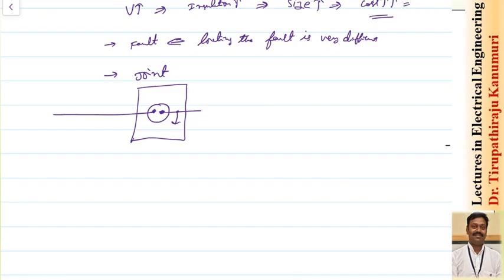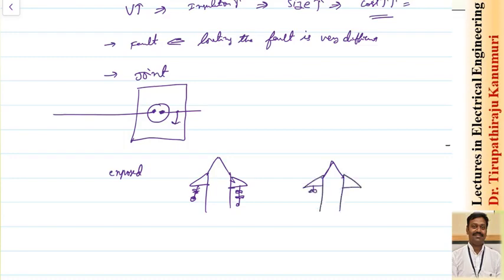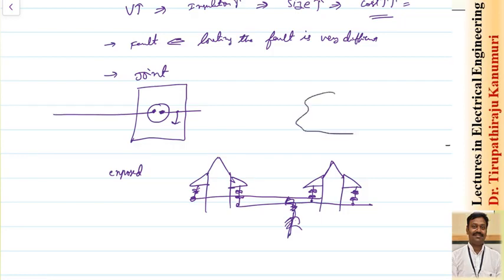Now coming to public safety. Overhead lines are exposed to the atmosphere, so there is a tower with insulators and conductors. Nearby plants or objects during the rainy season may fall on the conductors, causing a short circuit or increasing the chances of faults. That is one effect.